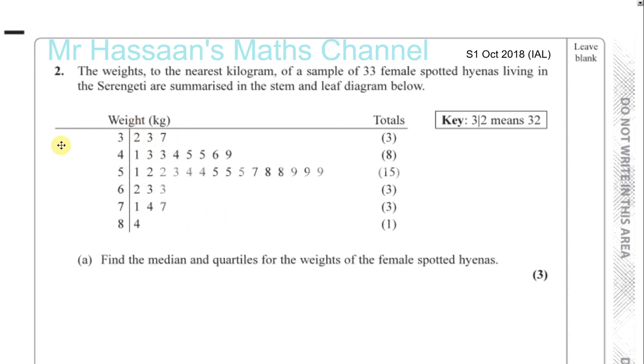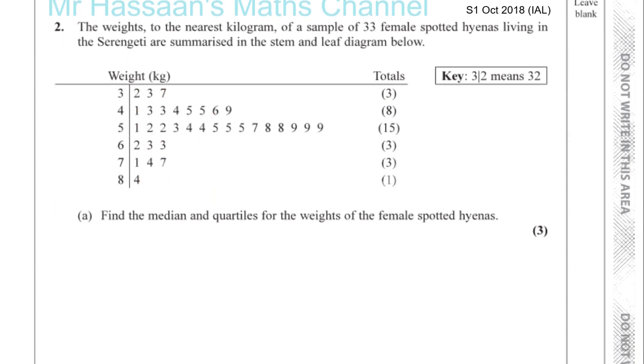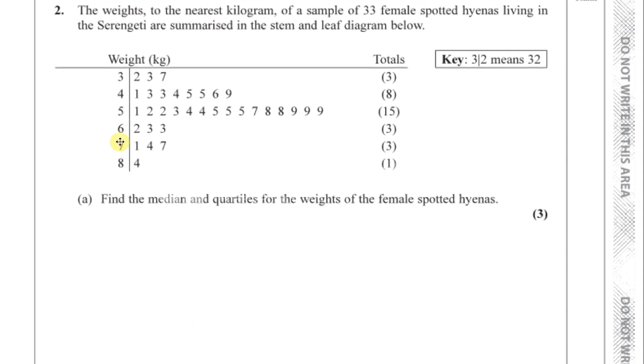Okay, so basically this means that this is 32, 33, 37, 41, 43 and so on. And this just tells us how many are in each of these categories. Okay, so we're asked to find the median and the quartiles for this data here. So we need to find the median and the quartiles. So let's start with the median. Now median is given the symbol Q2.